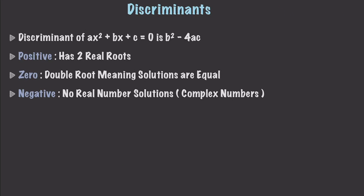The discriminant of the equation ax squared plus bx plus c equals zero is b squared minus 4ac. What the discriminant tells us is how many of those roots will be real numbers. If we plug in values and get a positive value, we have two real roots. If it comes back as zero, that means we have a double root — the solutions are equal, for example x plus 4 times x plus 4 equals zero. And if it is negative, there are no real number solutions — they are complex numbers.